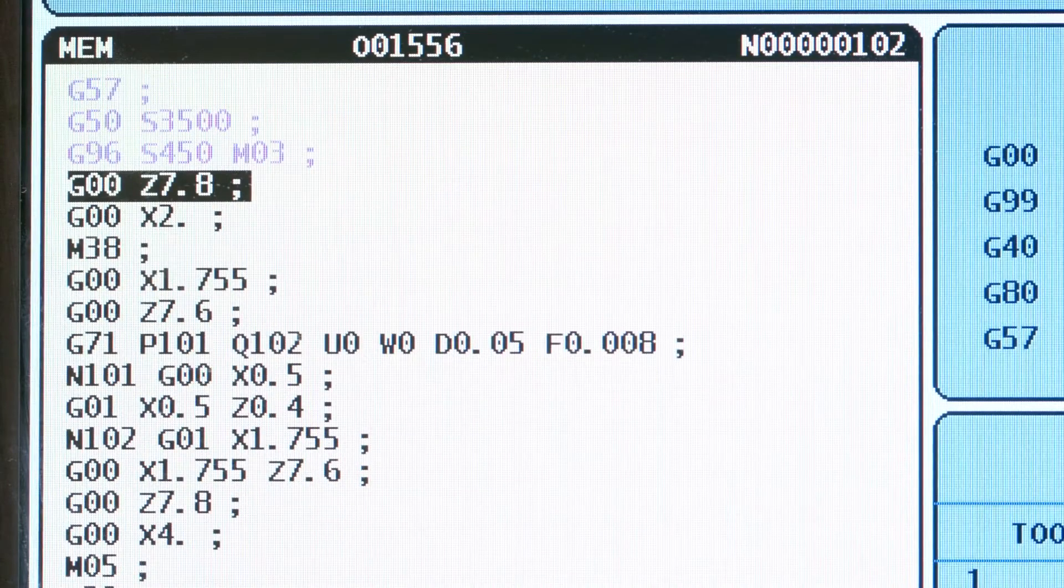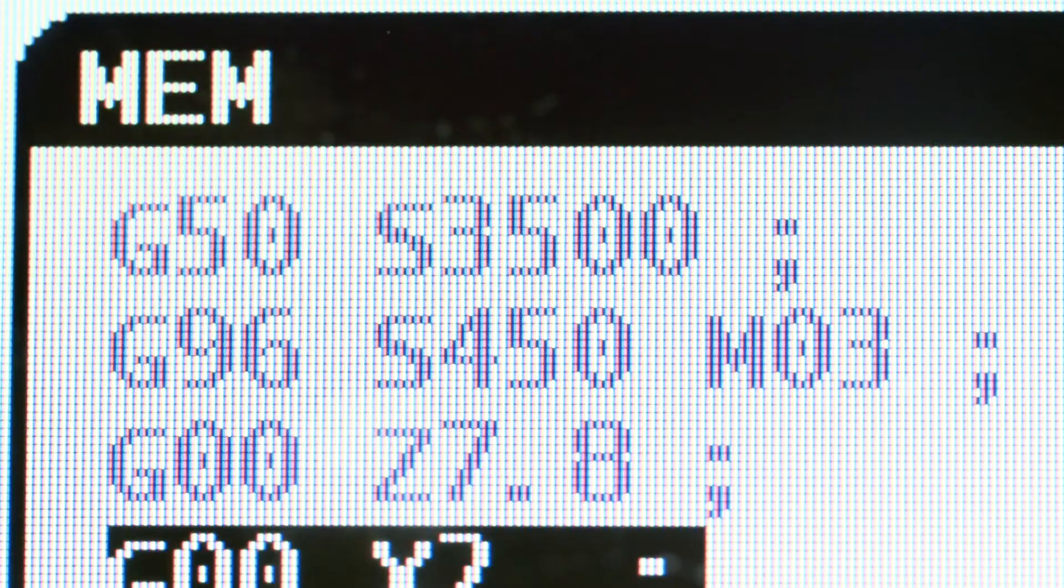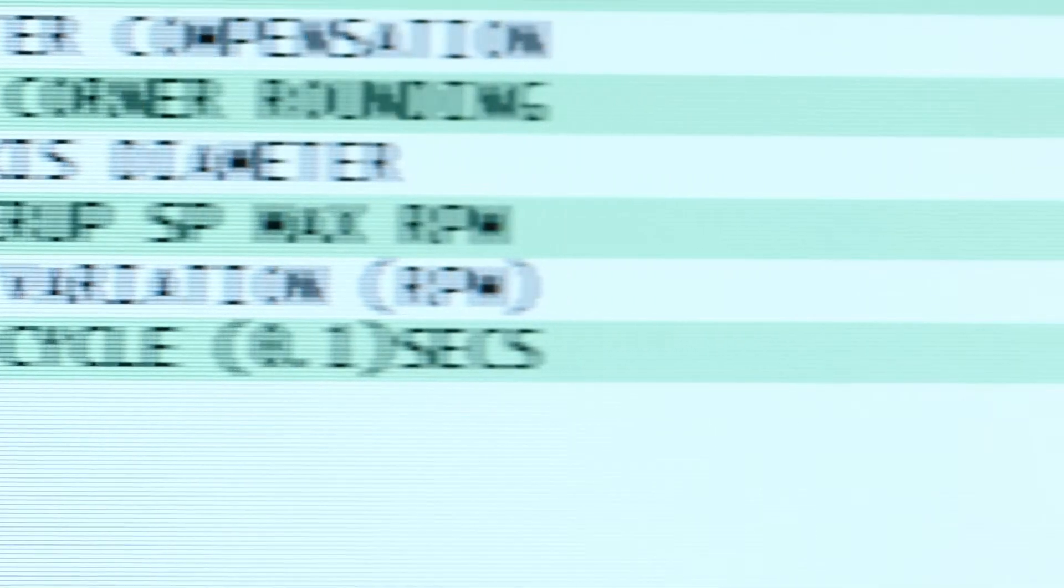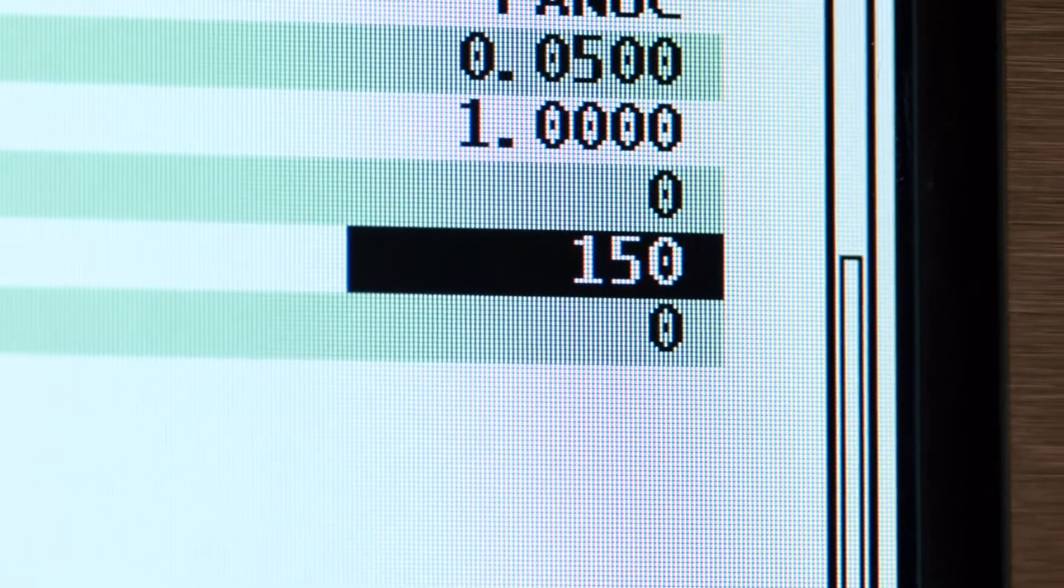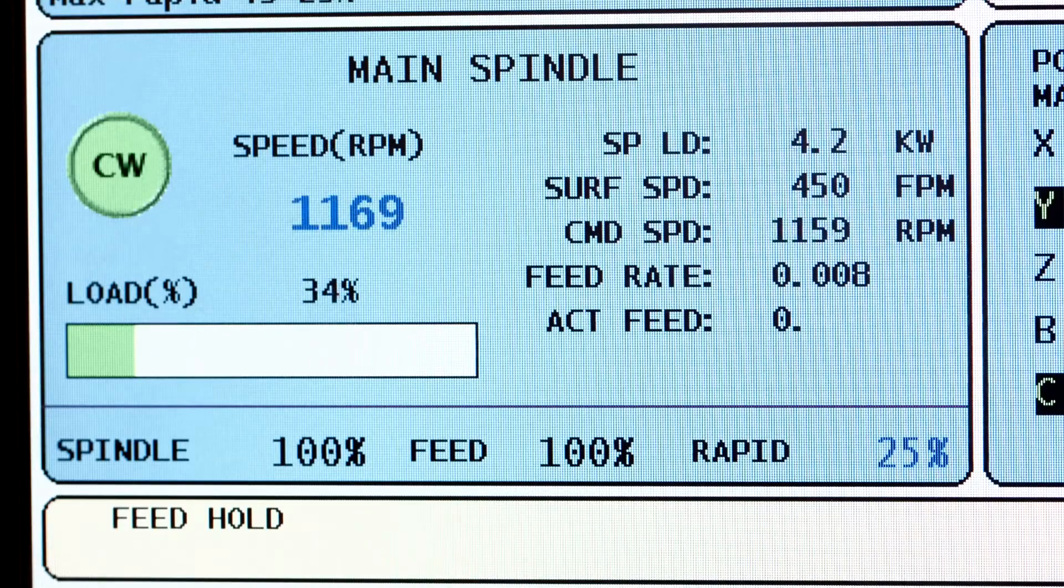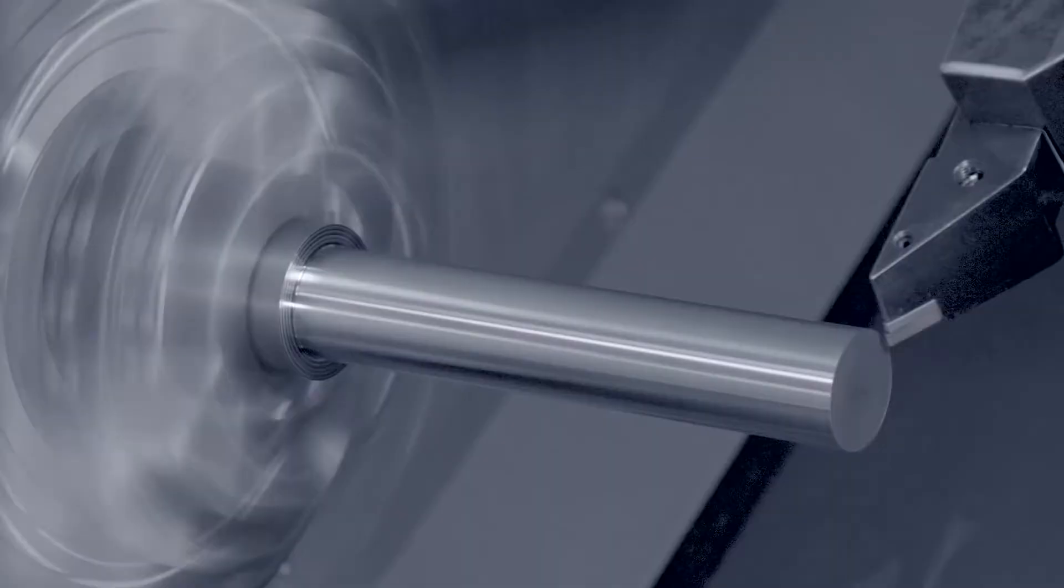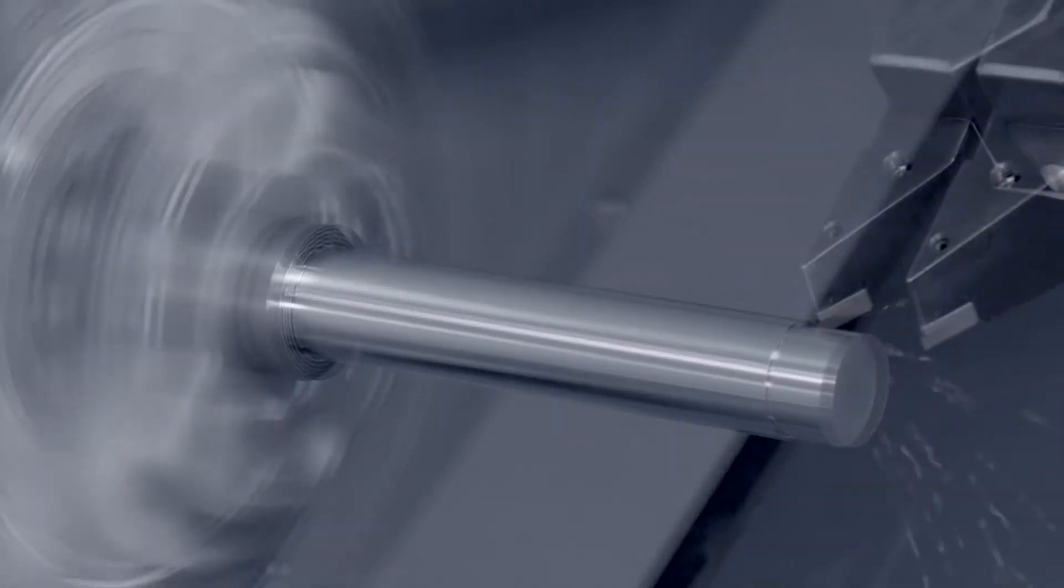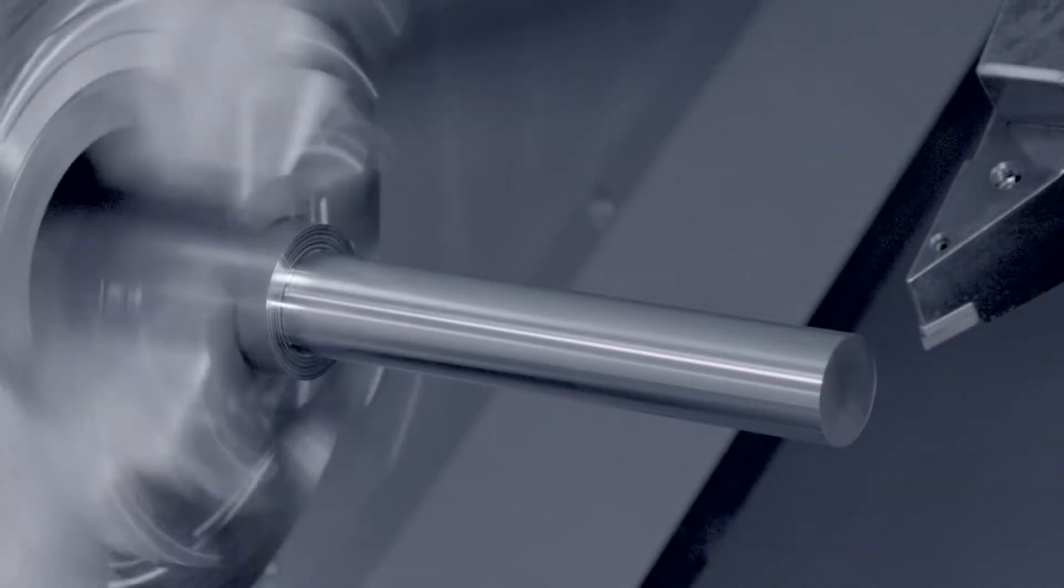We insert the M38 command in our program to turn on SSV. We'll use the SSV values from the earlier example. We had setting 165 set at 150 and we had setting 166 set at 12. Remember, that gives us a 300 RPM swing every 1.2 seconds.